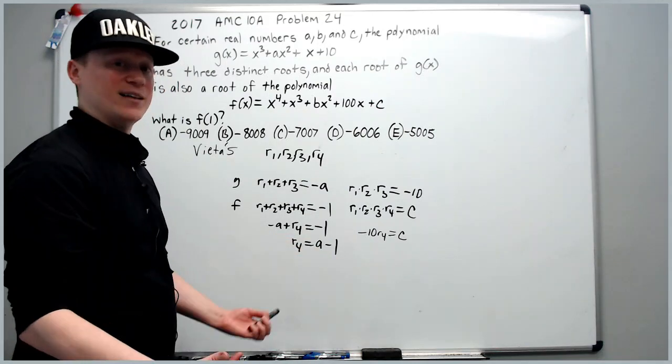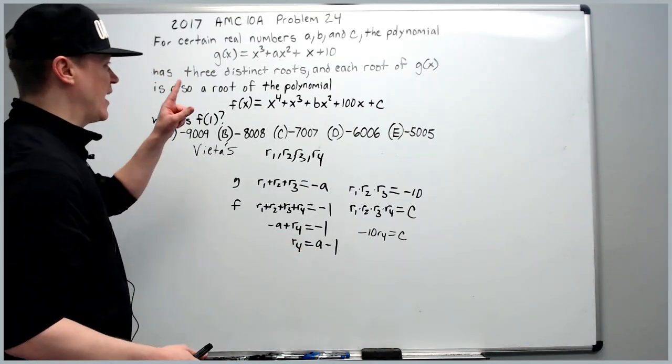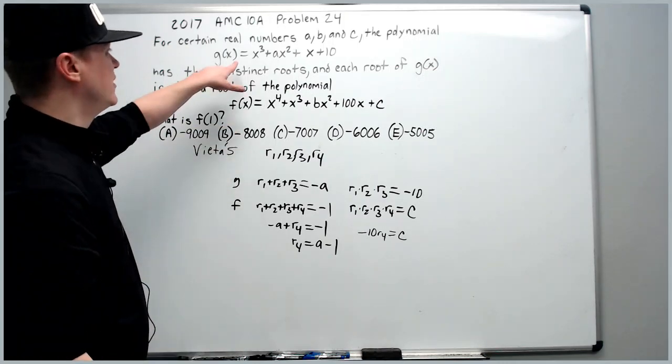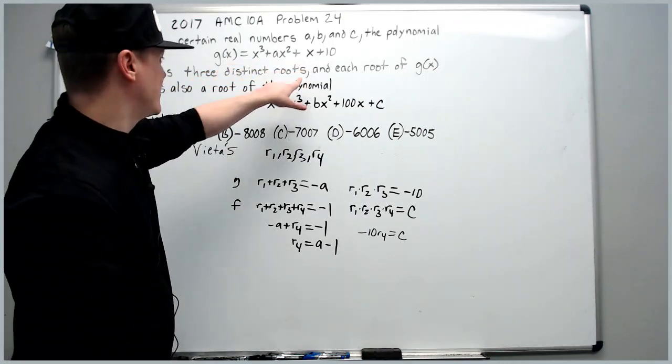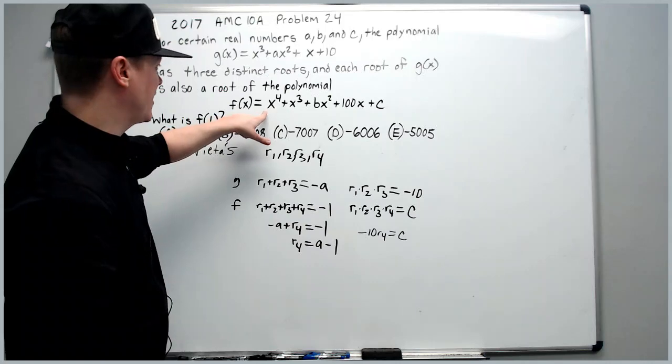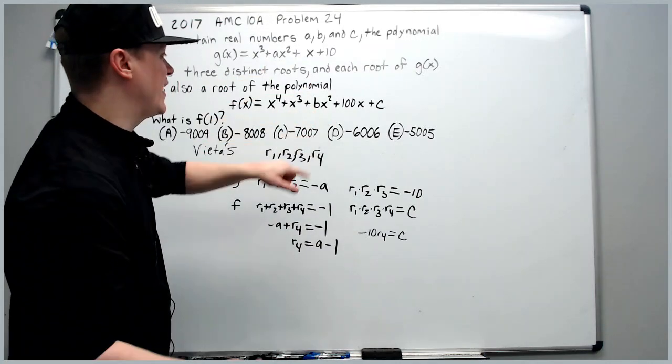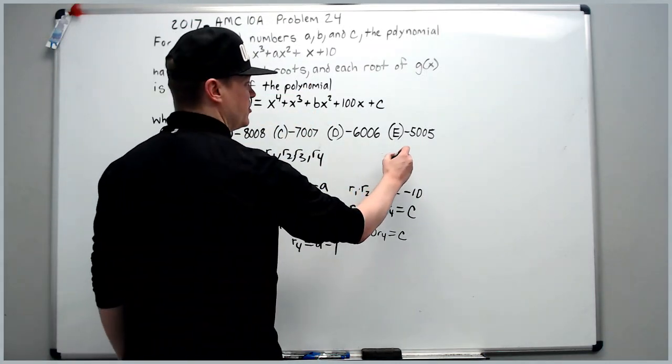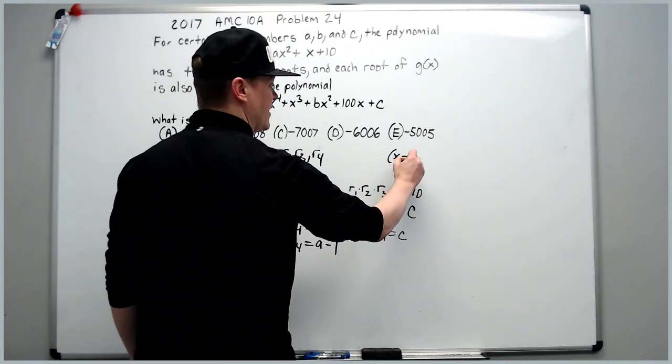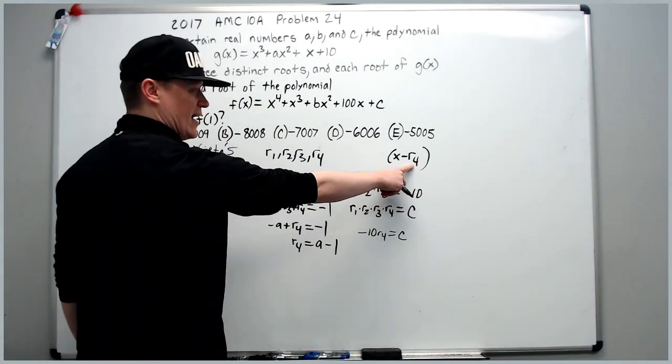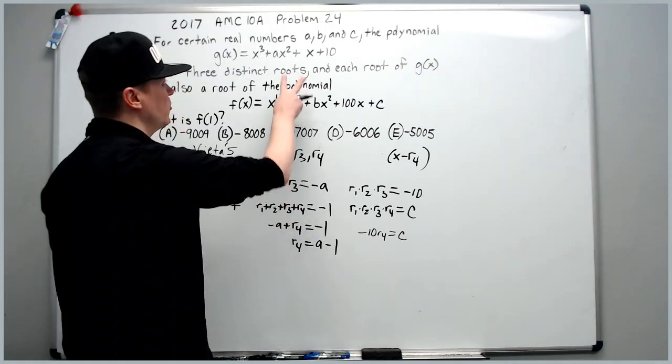Maybe these will be useful later in some capacity. The other point of attack that you can do is that you can take g of x and since all of the roots of g of x are in f of x, g of x will divide f of x. All you have to do is multiply it by the other factor that has the fourth root in it with g of x.